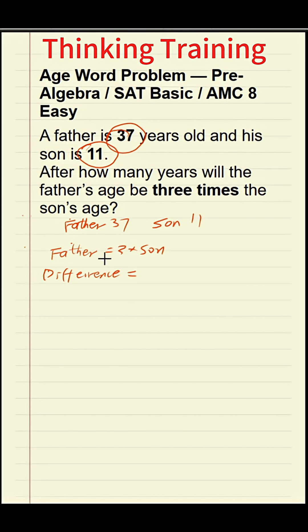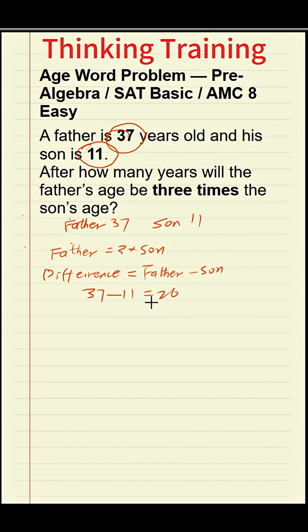Notice this: no matter how many years pass, the difference between their ages never changes. This year the difference is 37 minus 11, which equals 26 years. Next year the difference is still 26, the year after that it's still 26. For their whole lives it will always be 26.